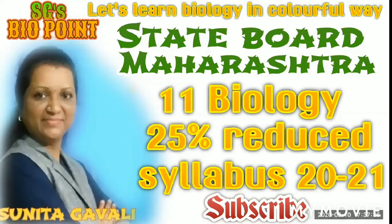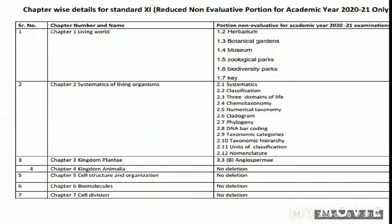Let's move on. In chapter 1, that is the Living World: 1.2 Herbarium, 1.3 Botanical Guidance, 1.4 Museum, 1.5 Zoological Parks, 1.6 Biodiversity Parks, and 1.7 Keys. These are the points that are non-evaluative.